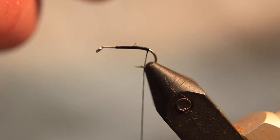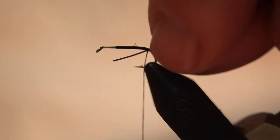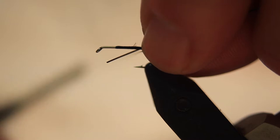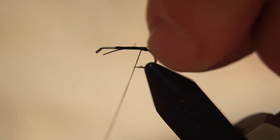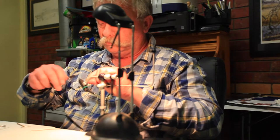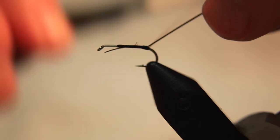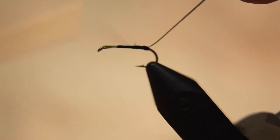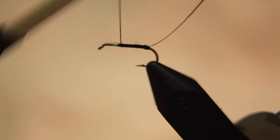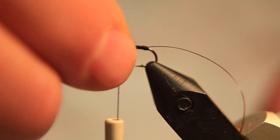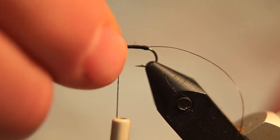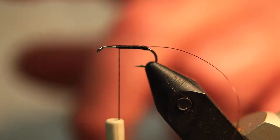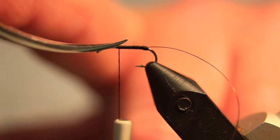Now we attach it at this position right here. And then we advance the thread back to the two-third position. Again, removing the excess there, we'll just snip that off.